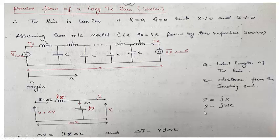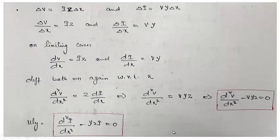Z is the impedance per unit length and Y is the admittance per unit length. Similarly, delta I equals voltage multiplied by its admittance per unit length times the length, so delta I equals V·Y·delta X. Dividing both sides by delta X: delta V over delta X equals I·Z, and delta I over delta X equals V·Y.